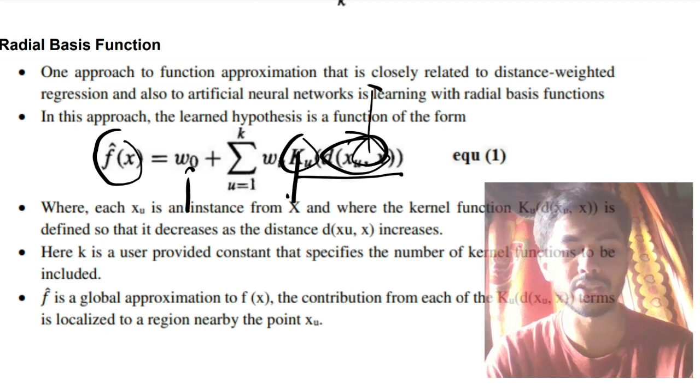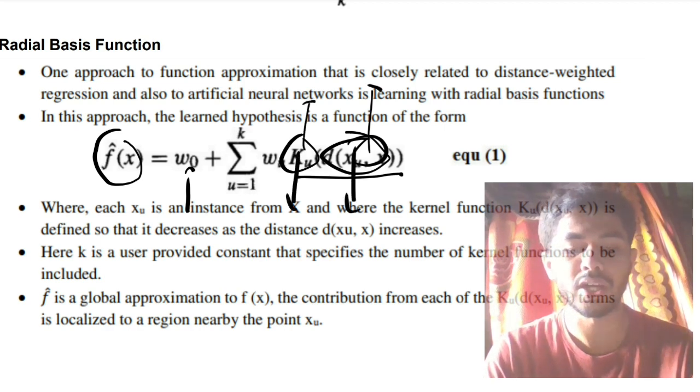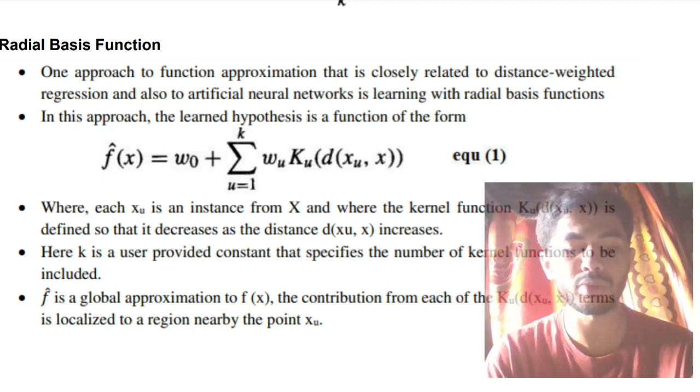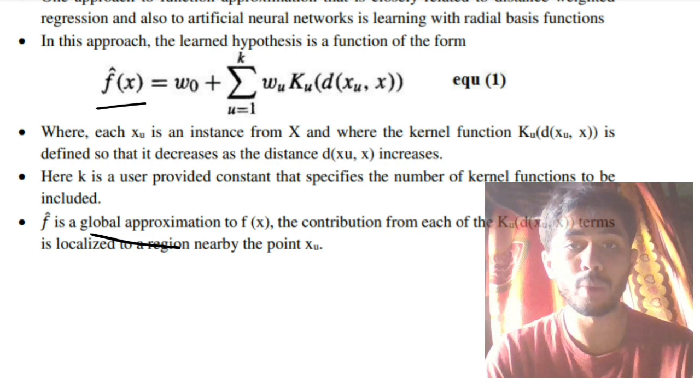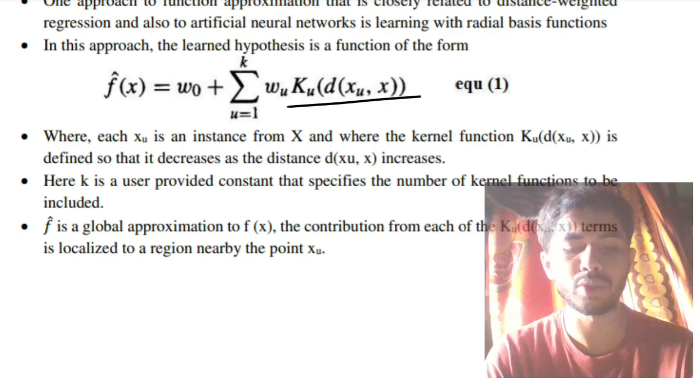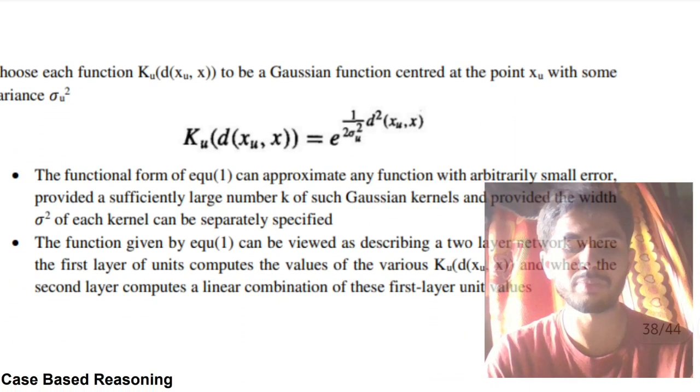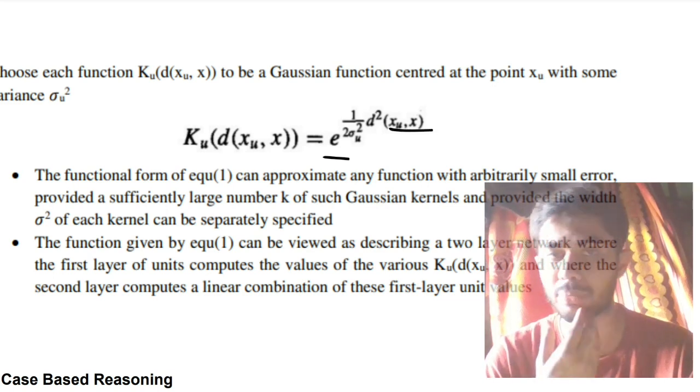If du increases, ku decreases. If ku increases, du decreases. That's the second point. The third point you need to write is we'll be calculating this value based on the k value, and once you have calculated, it is called the global approximation for that particular point xu. Now we have to write something about what is ku(d(xu, x)). It has a simple formula, same as the previous one: e^(-1/(2σ²) * d²(xu, x)). That's the same formula which we learned before, just written in a different form.